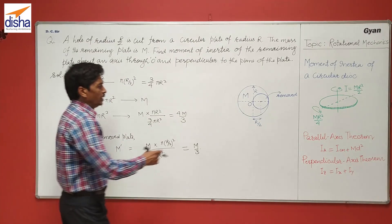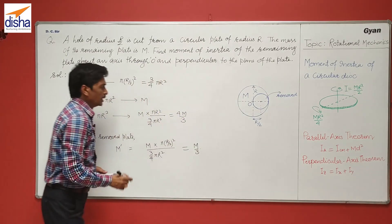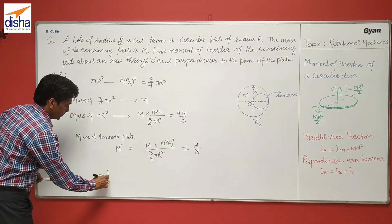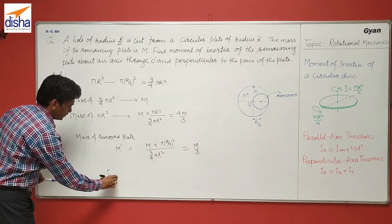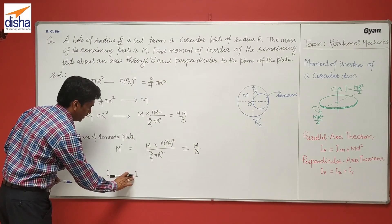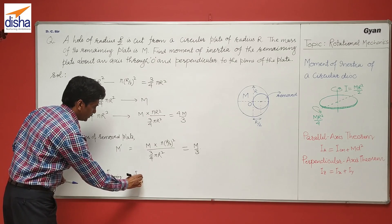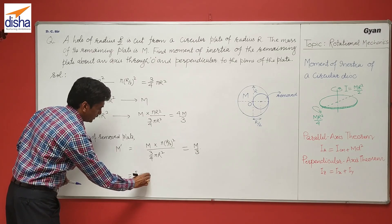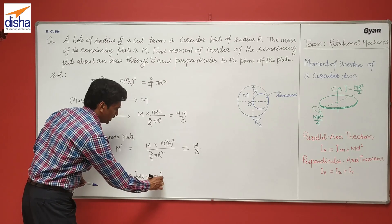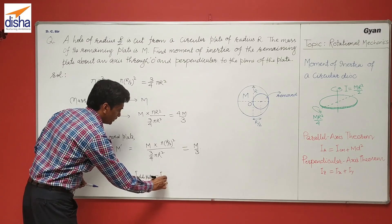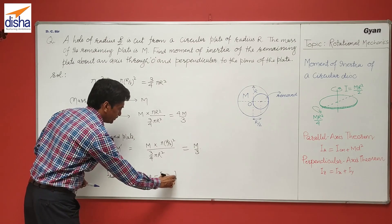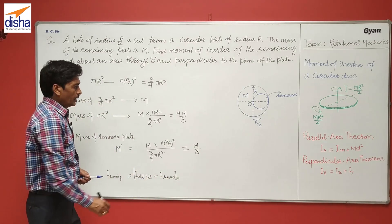Now the moment of inertia of the remaining plate, I, is equal to the moment of inertia of the whole disk minus the moment of inertia of the removed plate, both about the axis O.